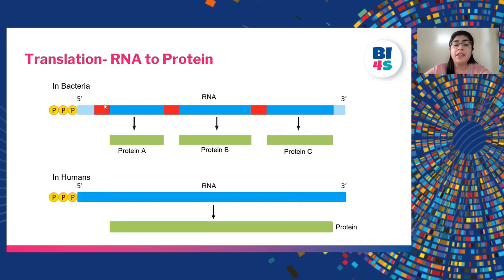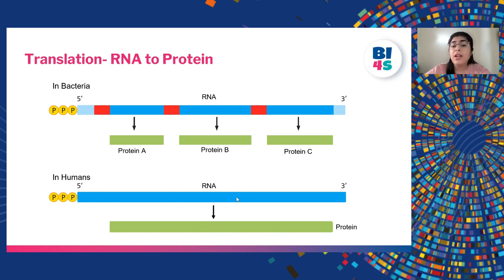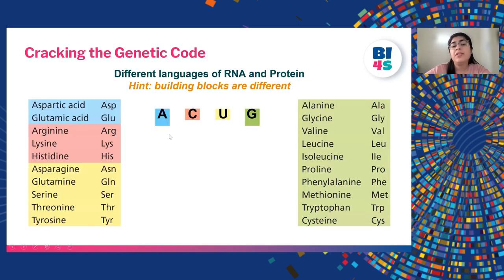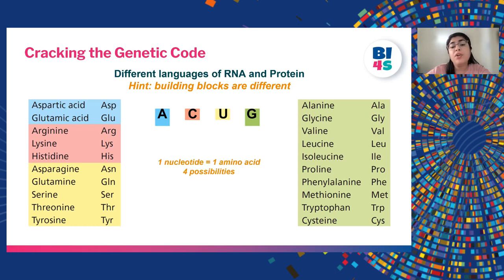In simpler organisms such as bacteria, one RNA message can contain information from different genes, so proteins that usually work together can be translated from a single RNA. But in complex organisms like humans, one RNA can only translate into one type of protein. Before understanding translation, it is important to recognize that the languages of RNA and protein are different — RNA is made up of four nucleotides (A, C, U, G) whereas proteins are made up of 20 different amino acids. If one nucleotide coded for one amino acid, there would be only four possibilities, leaving 16 amino acids uncoded.